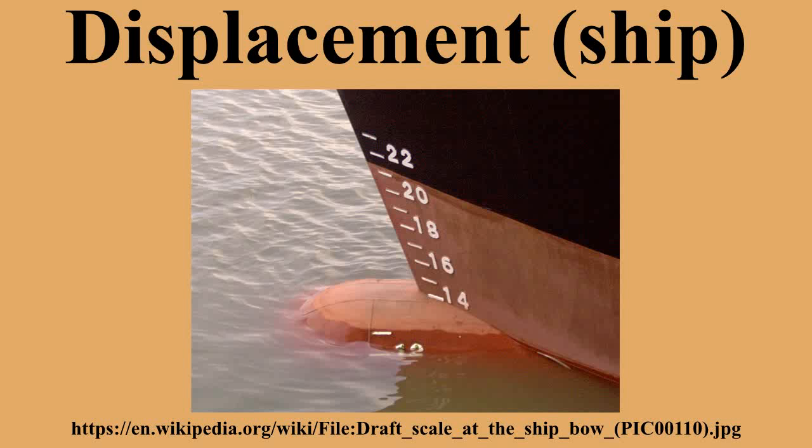The displacement or displacement tonnage of a ship is the ship's weight. The name reflects the fact that it is measured indirectly, by first calculating the volume of water displaced by the ship, and then calculating the weight of that water. By Archimedes' principle, this is also the weight of the ship.